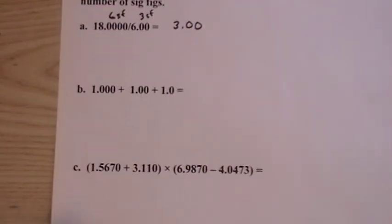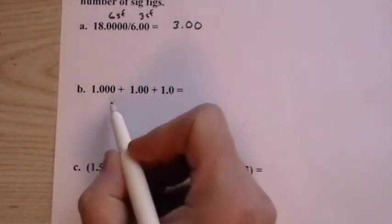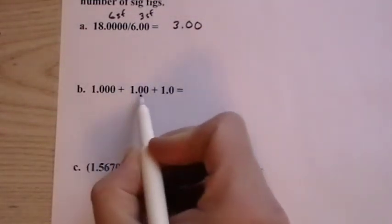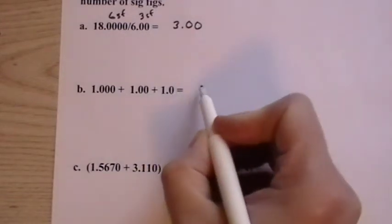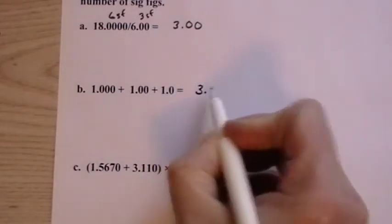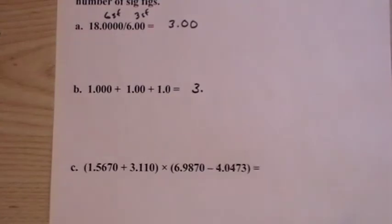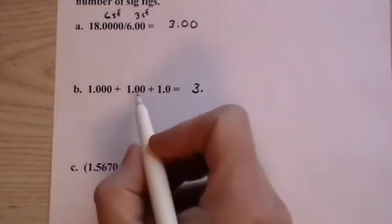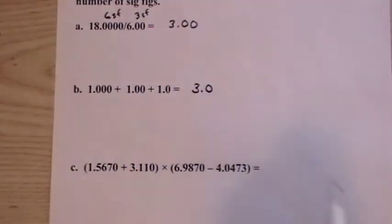For addition and subtraction, we go by the number of decimal places. The least number of decimal places. So we have three decimal places, two and one. So this would be three again, just by chance. Same as the above answer. But here we have one decimal place. That's where we have to stop.